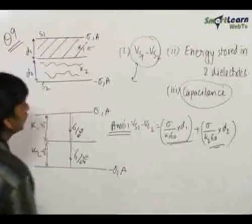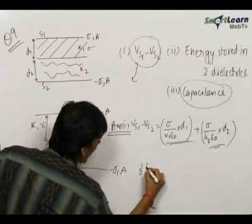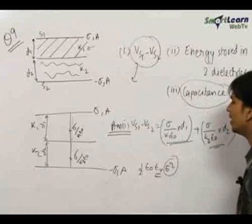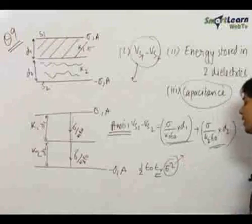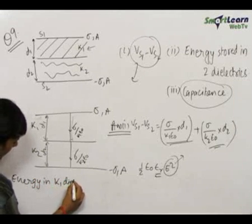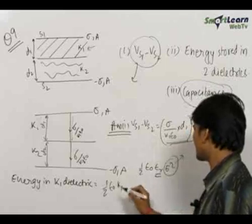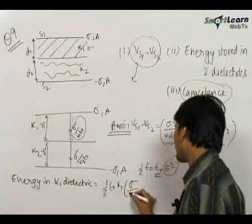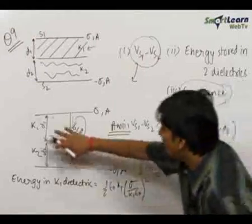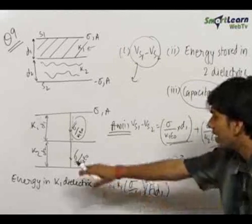Now we need to find the energy stored in the two dielectrics. There is a simple formula: the energy density in a region is equal to half epsilon zero epsilon_r into E squared, where epsilon_r is the dielectric constant of the medium and E is the electric field in the medium. For the k1 dielectric, the energy density is half epsilon zero into k1 into sigma upon k1 epsilon zero whole squared. Multiplying by the volume A into d1 gives the energy stored in the k1 dielectric.